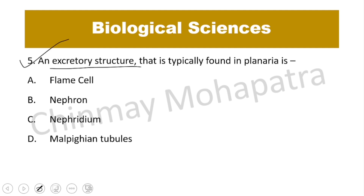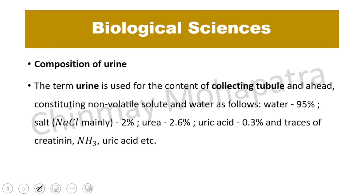Question number 5: What is the excretory structure typically found in Planaria? The answer is flame cells.